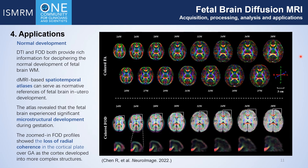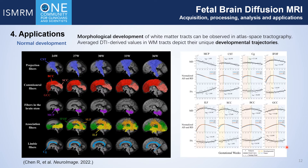The quantitative measures by DTI and FOD provide rich information for deciphering the normal development of fetal brain white matter. By averaging dMRI data of a fetal population, we can generate a spatiotemporal atlas, which can serve as a normative reference of in-utero neurodevelopment. In our previous work, the population-based atlas revealed that the fetal brain experienced significant microstructural development during gestation. The zoomed-in FOD profiles showed the loss of radial coherence in the cortical plate over gestational age, as the cortex developed into more complex structures. Atlas-based tractography revealed the morphological development of major white matter tracts.